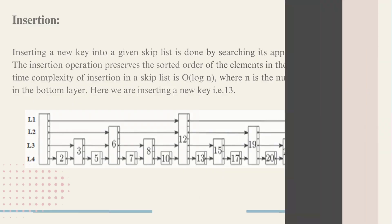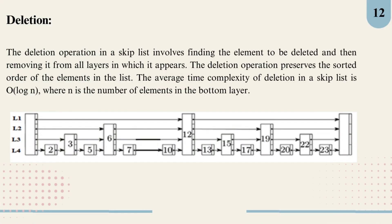Now, we will explore how to delete an element from a skip list. First off, we need to locate the element we want to remove. Once we find it, we will delete it from all the layers where it shows up. This ensures that our skip list stays clean and organized. Just like with insertion, we want to maintain the sorted order of the elements even after a deletion. And here is a fun fact: the average time complexity for deletion in a skip list is O(log n). That's right. If we have n elements in the bottom layer, this operation is still quite efficient. So remember, find the element, remove it from all layers, and keep everything in order.